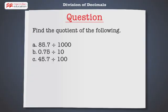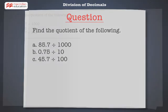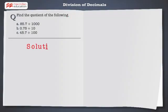Find the quotient of the following: 85.7 divided by 1000, 0.75 divided by 10, 45.7 divided by 100. Let's solve each of them now.